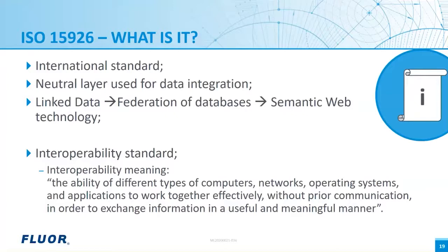The linked data concept was invented by the semantic web project. All of this is secure — of course, engineering needs security. ISO 15926 is an interoperability standard. Interoperability means the ability of different types of computers, networks, operating systems, and applications to work together effectively without prior communication, in order to exchange information in a useful and meaningful manner. The 'without prior communication' part is important — it means that if somebody wants to send data to you and a data model for the data is not settled, there is still only one way that the data can be modeled, and when you receive it, it connects to your data in the same way.